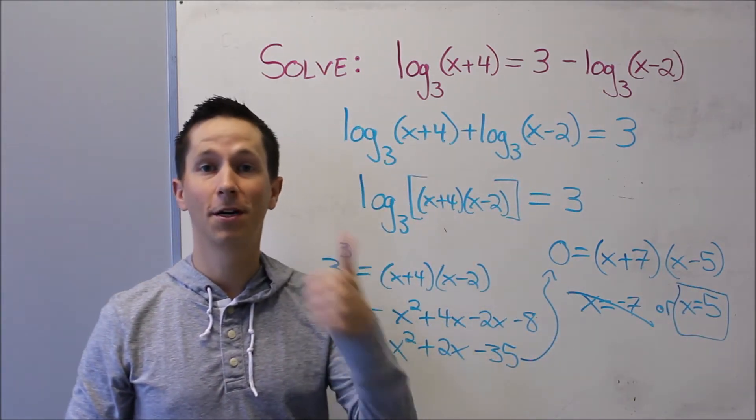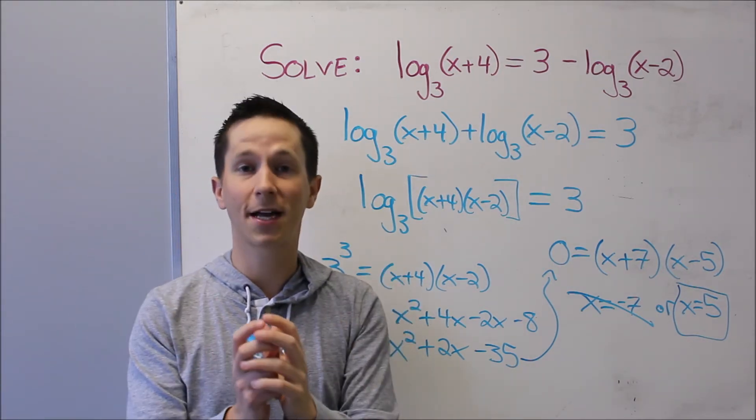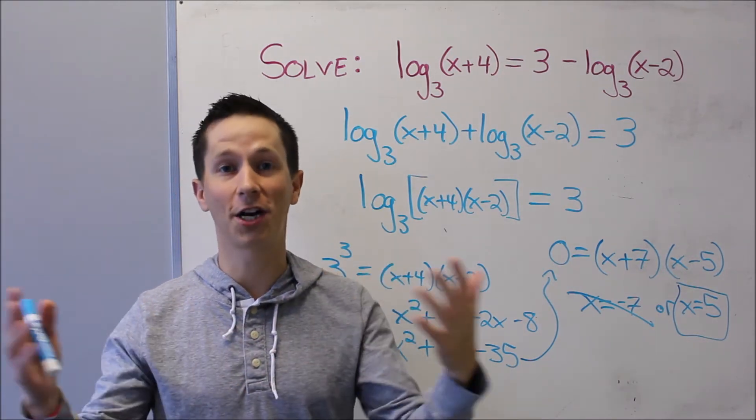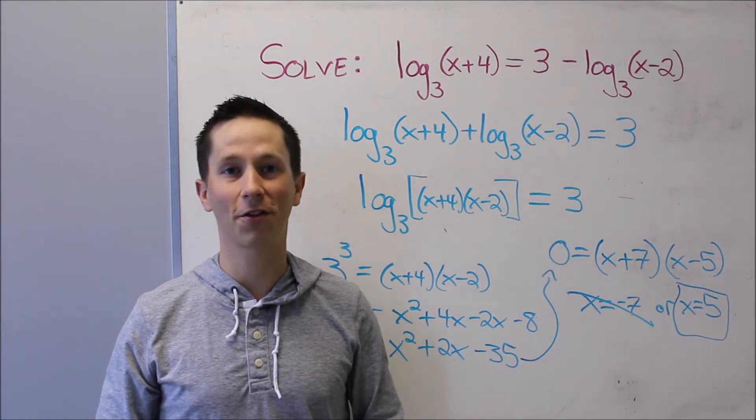Remember those steps: move everything with a logarithm on one side, everything without on the other side, collapse down to one logarithm, and then change the form back to exponential. It's super easy if you follow those steps.